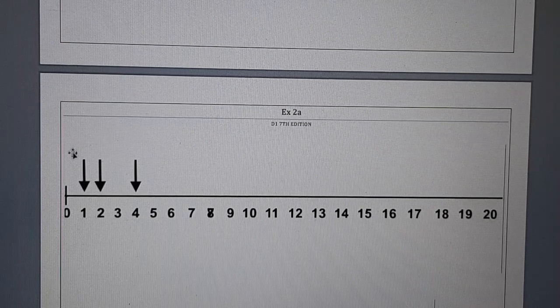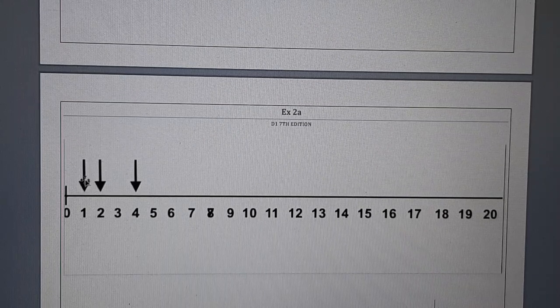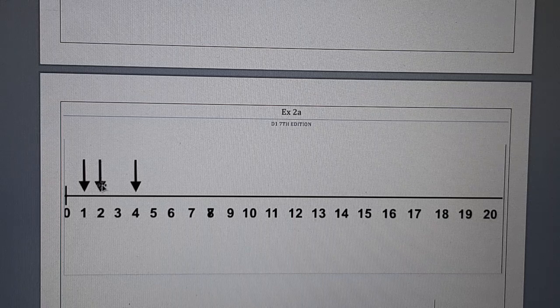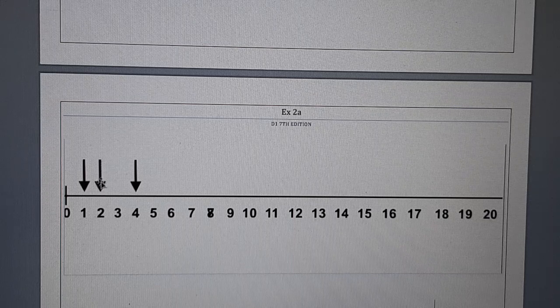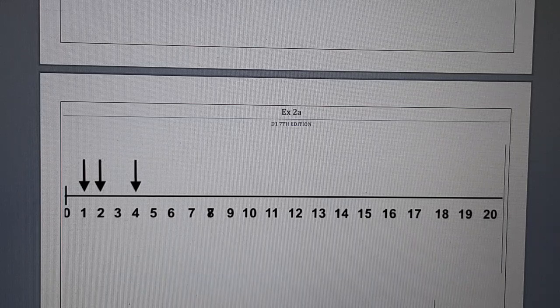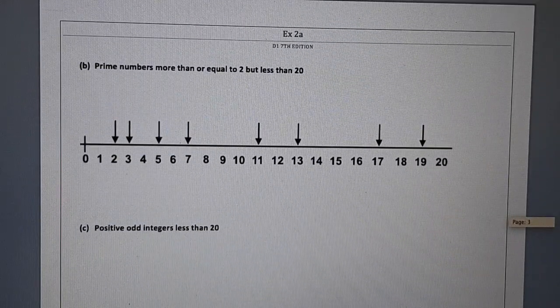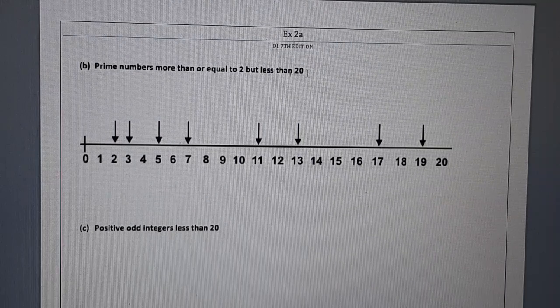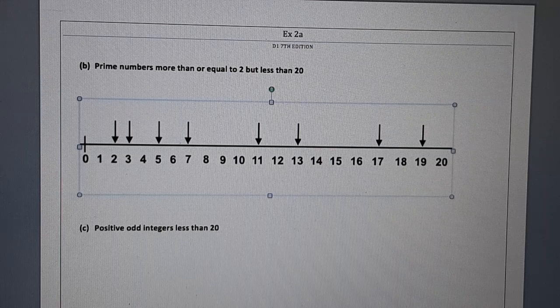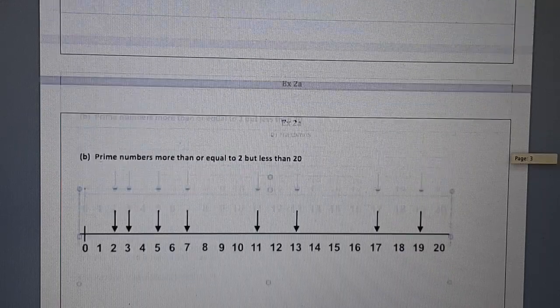Then we have to represent common factors of 12 and 16. So these are the common factors of 12 and 16. 1 is a common factor of 12 and 16. Then we have got 2, a common factor of 12 and 16. Then we have got 4, a common factor of 12 and 16. We have to pay focus on these two parts which were a bit interchanged. I have made the necessary correction over here.